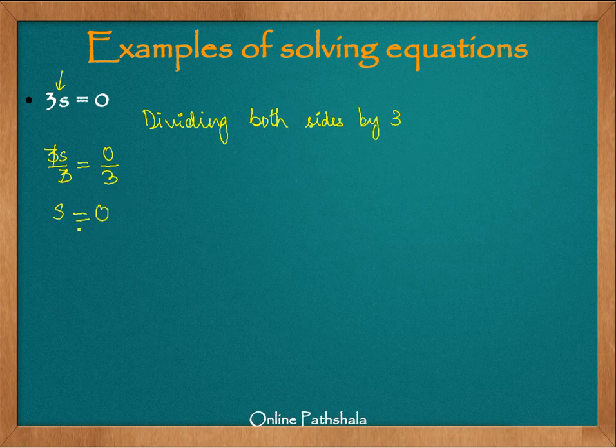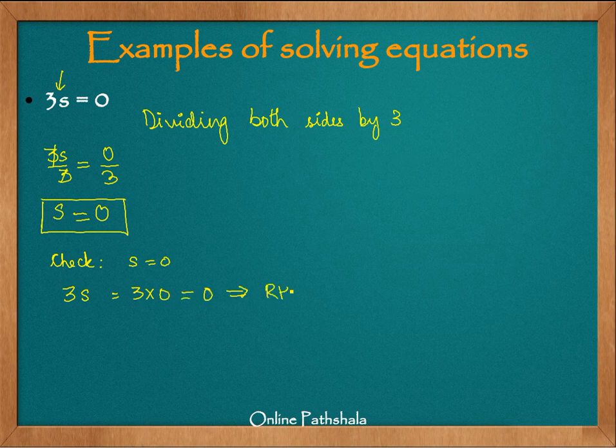Therefore s equals 0 is a solution of this equation. Now to check this equation we simply substitute s is equal to 0 in the left hand side which is 3s or 3 times 0 is 0 which is nothing but your RHS.